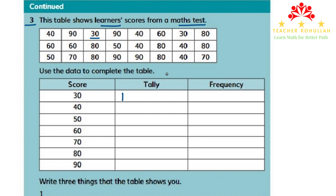To find how many students scored 30, we look through each row. We find 2 marks, so in the frequency table we write 2. It shows 2 students scored 30.